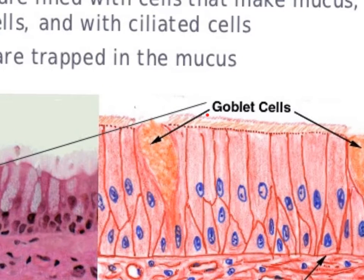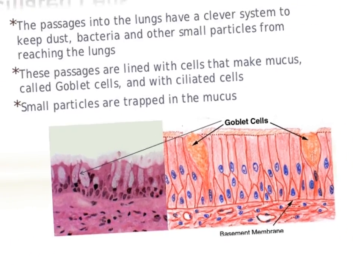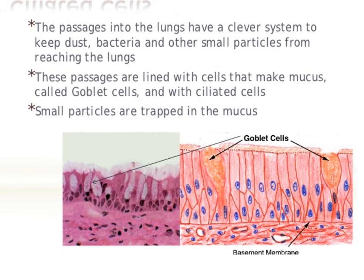These little hairs carry the mucus, and what the mucus does is it traps — as it describes in that bit there — the dust, the bacteria, and other small particles, to stop them from getting to the lungs. So this is how the goblet cells and the ciliated cells work together to keep our airways clean.